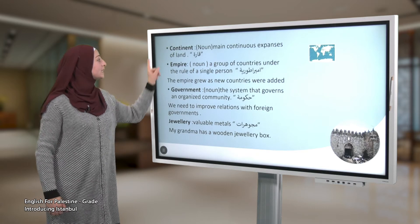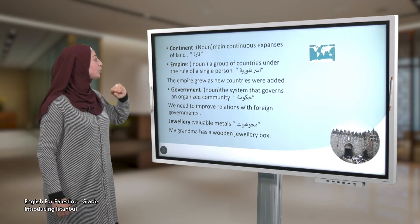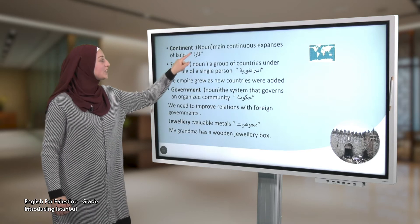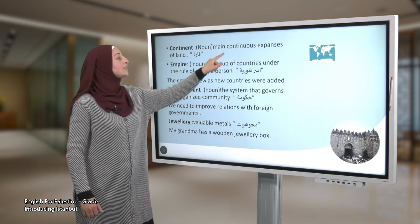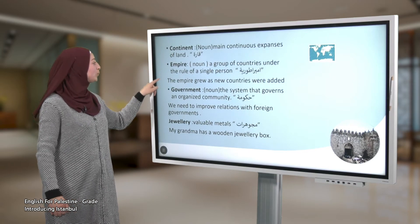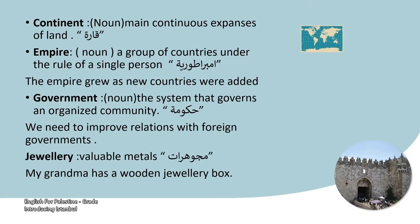Let's start with the new words in your text. Word number one: continent. Its part of speech is noun. It means the main continuous expanses of land. Word number two: empire. It is also a noun, meaning a group of countries under the rule of a single person. Example: the empire grew as new countries were added.